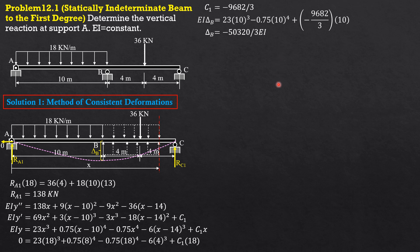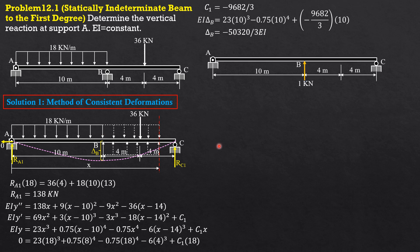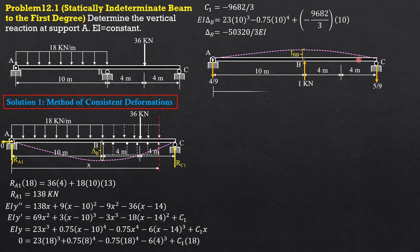For the second part, we apply a unit upward load of 1 kilonewton. Solving for the reaction: reaction downward times 18 equals 1 times 8, so 8/18 equals 4/9. The corresponding deflection is FBB — we call this the flexibility coefficient. So this reaction is 4/9, and the other must be 5/9. We then section this part and call that x.